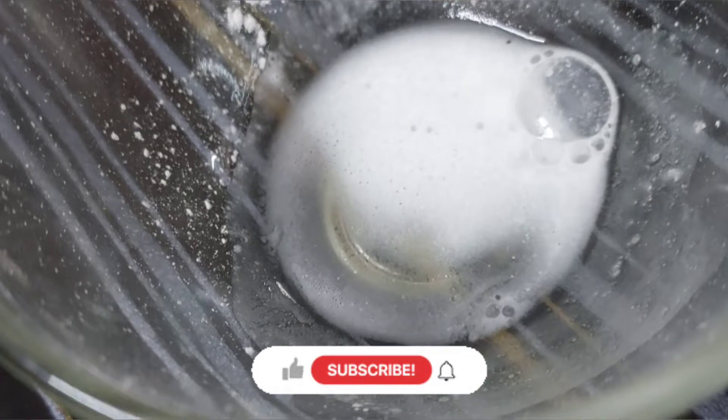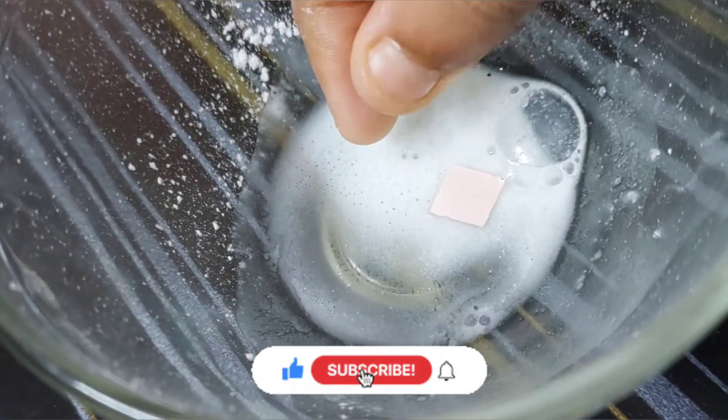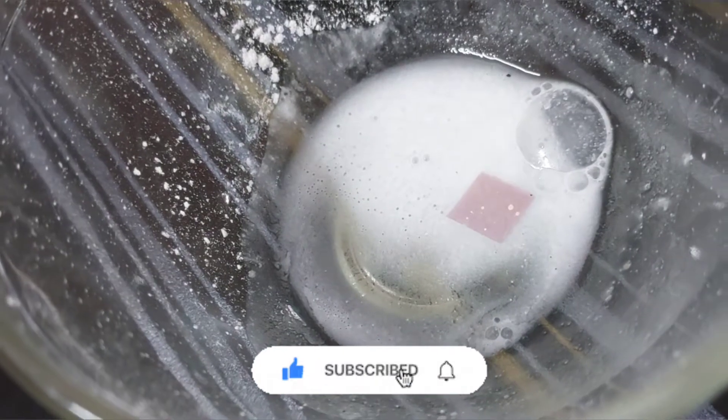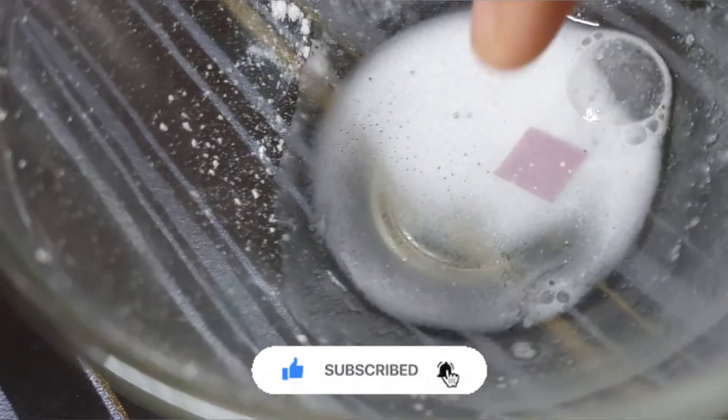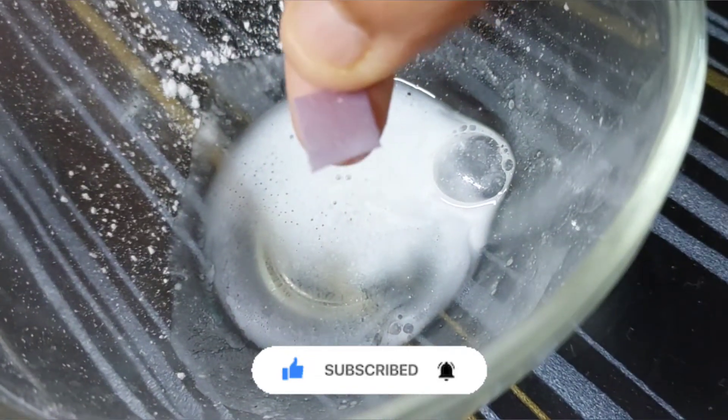Here we have baking soda solution. Now we'll put red litmus paper into this solution and as you can see, it is converted into blue litmus paper. This means that it is basic in nature.